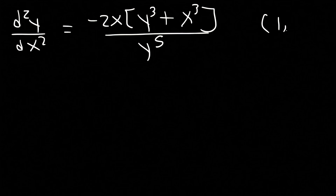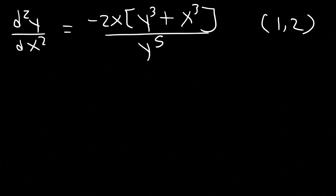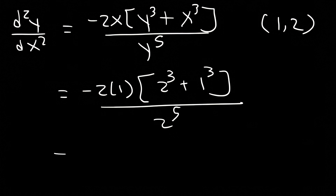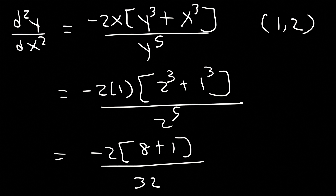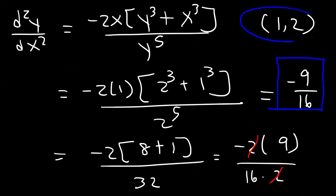Now we have the point (1, 2). Replacing x with 1 and y with 2: negative 2 times 1, times 2 to the third which is 8 plus 1 cubed which is 1, over 2 to the fifth which is 32. That gives negative 2 times 9 over 32, which is negative 18 over 32. We can cancel a 2, so the final answer is negative 9 over 16. That's the value of the second derivative at the point (1, 2).